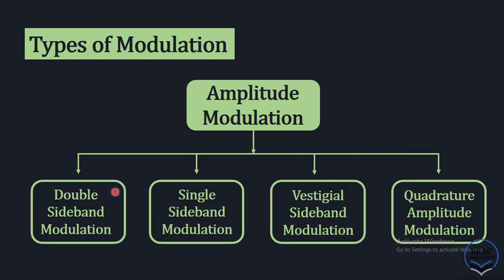Amplitude modulation is further divided into double sideband modulation, single sideband modulation, vestigial sideband modulation, and quadrature amplitude modulation. We will talk about the individual types of modulation techniques in detail in this course, spending quite a lot of time on double sideband modulation and single sideband modulation. In the next lecture, we will start our discussion on amplitude modulation with double sideband modulation. Thank you.